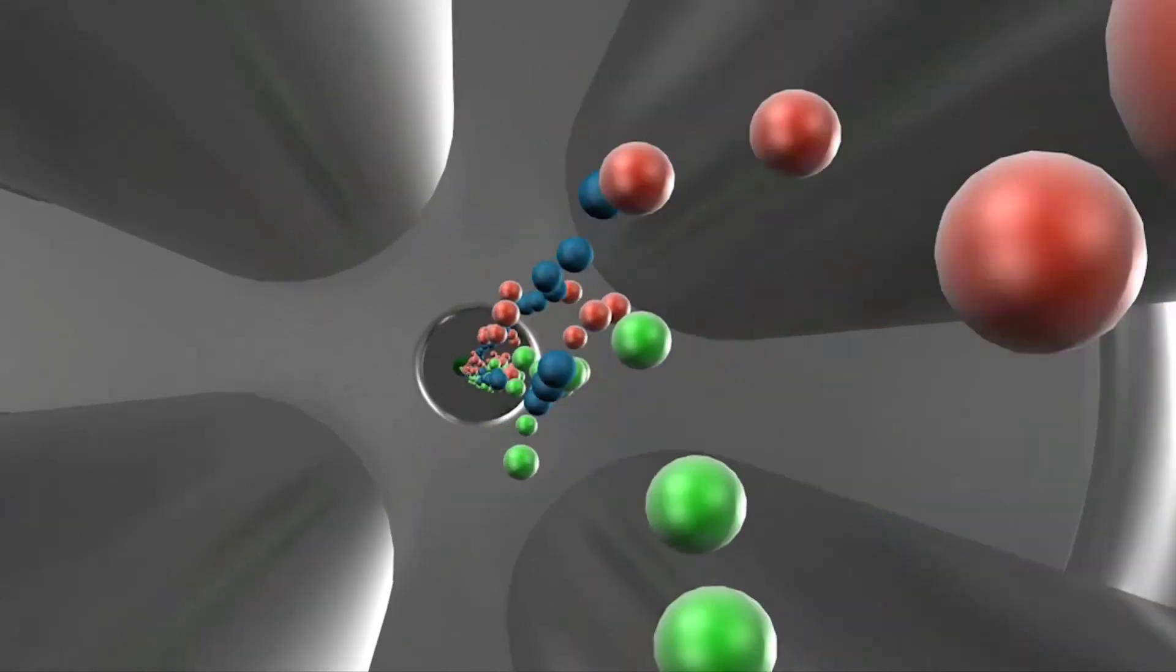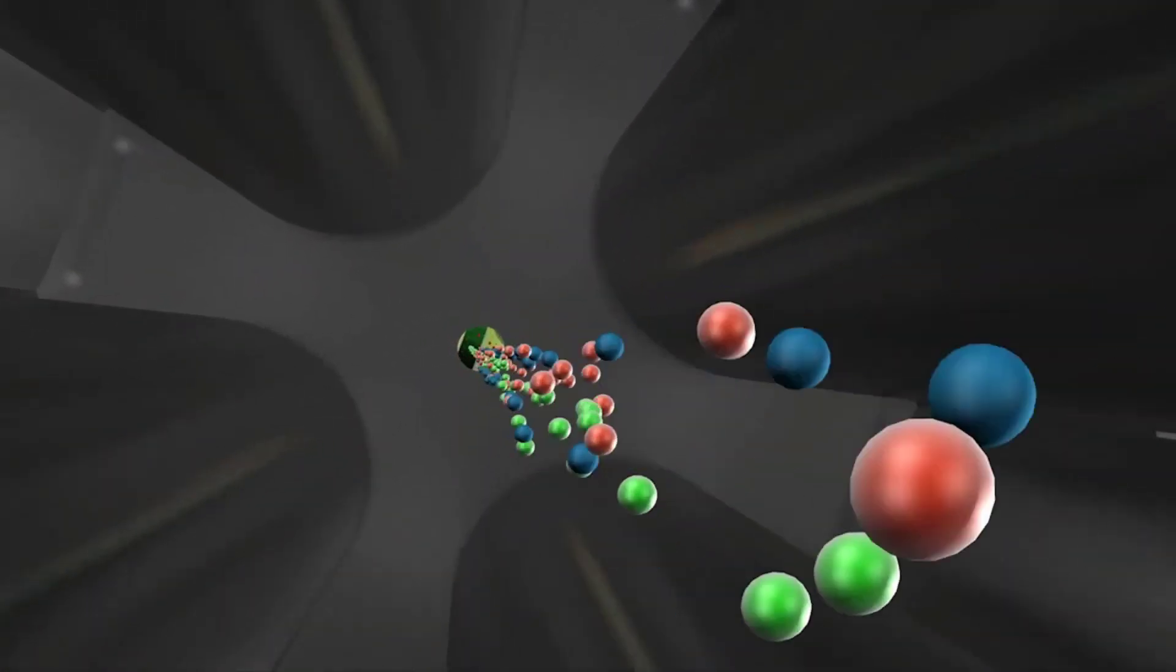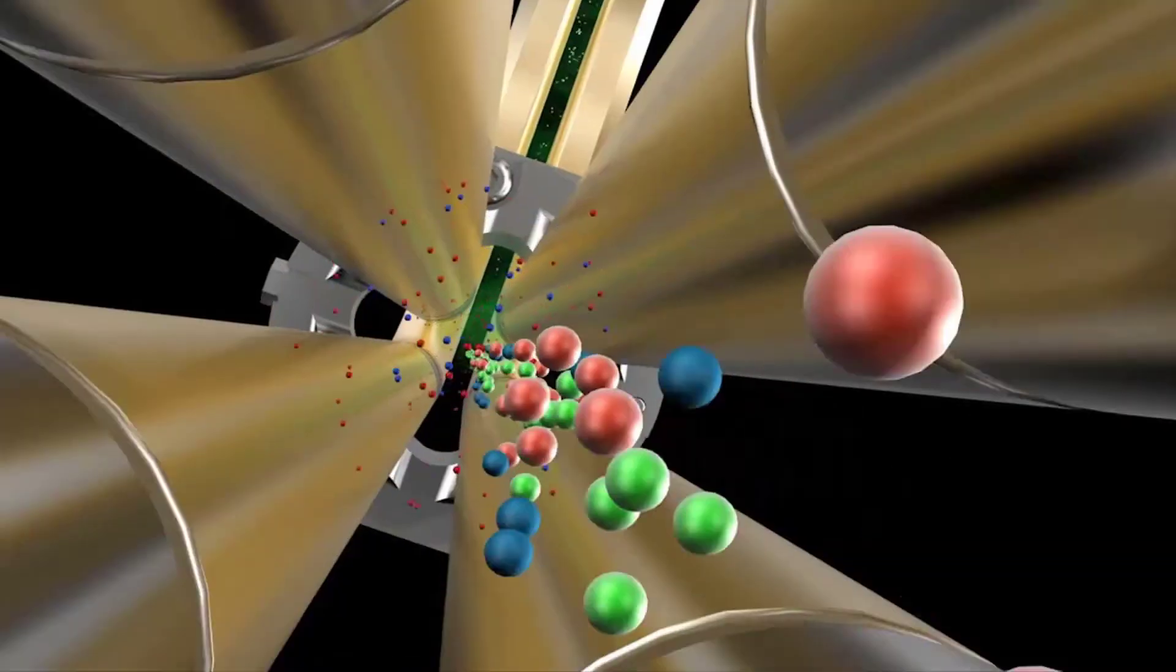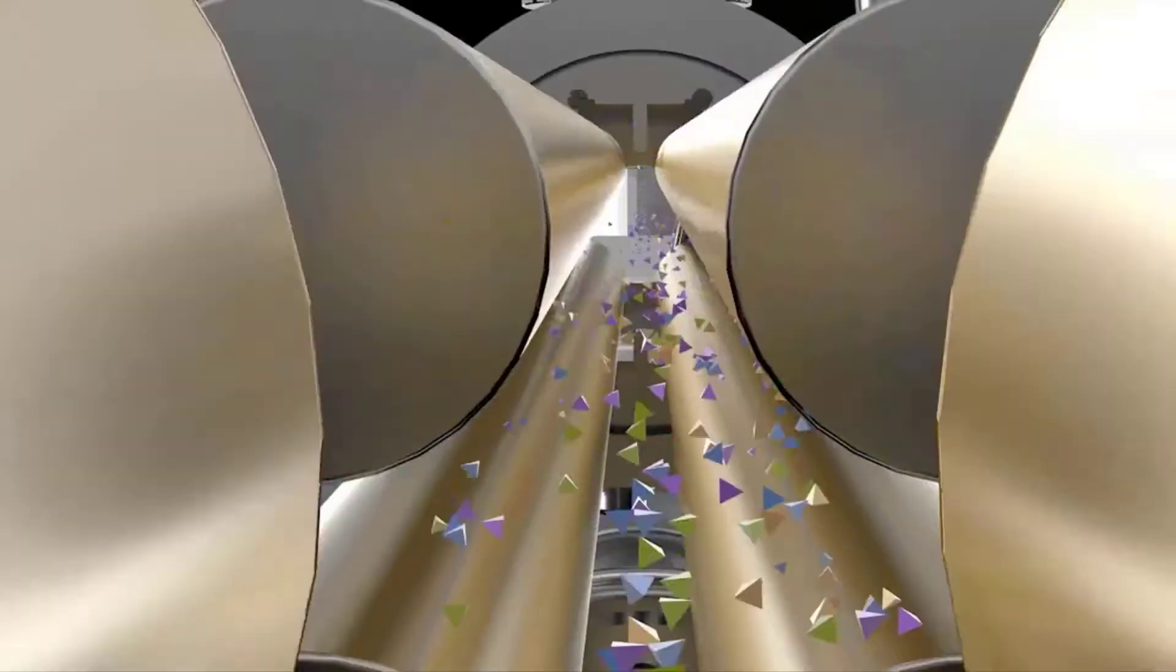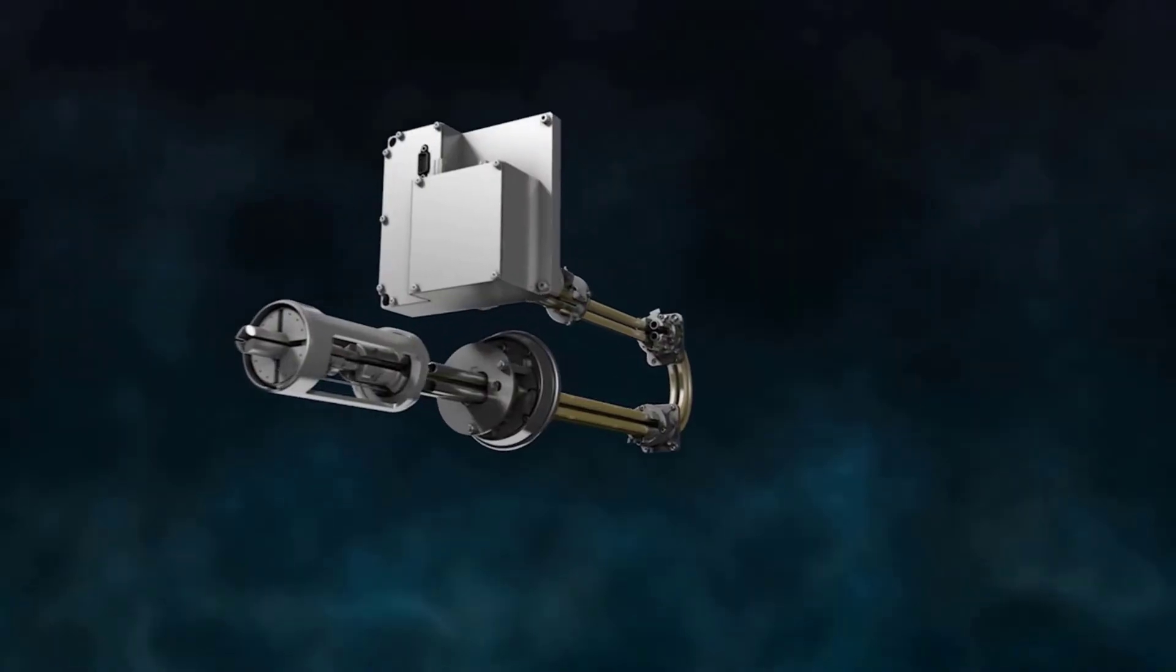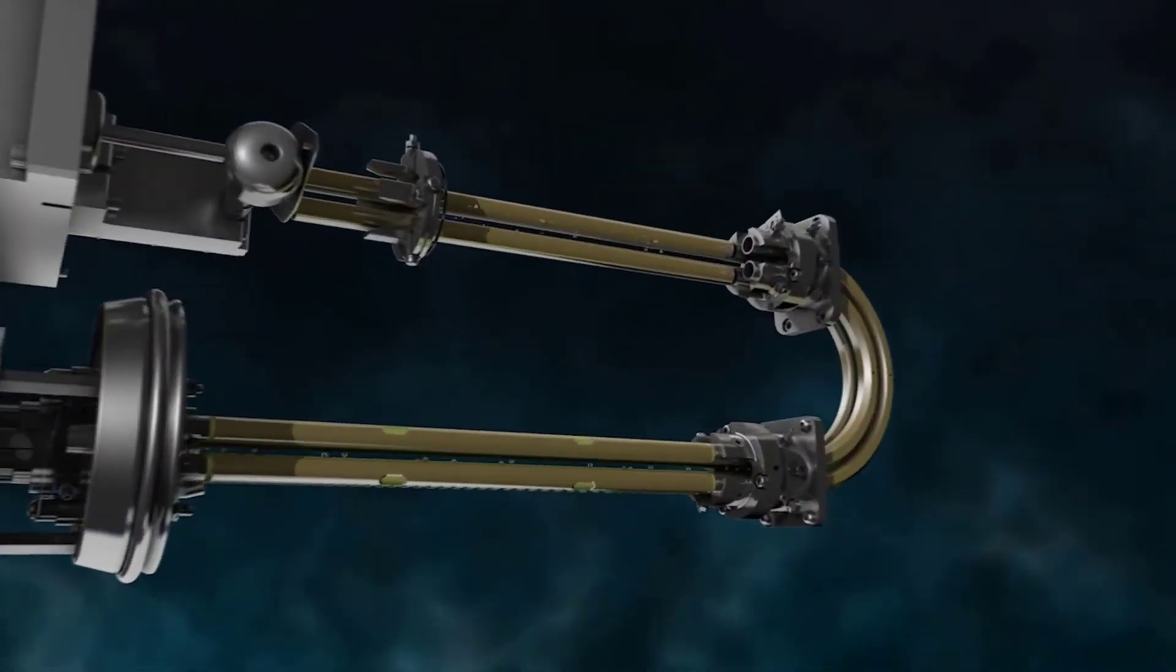Mass analyzers can filter, select, fragment, and most importantly measure ions of different M over Z. There are different types of analyzers, but they typically use electric or magnetic fields to separate and focus ions of different M over Z. A popular example is the triple quadrupole that uses alternating RF and DC voltages to separate ions.